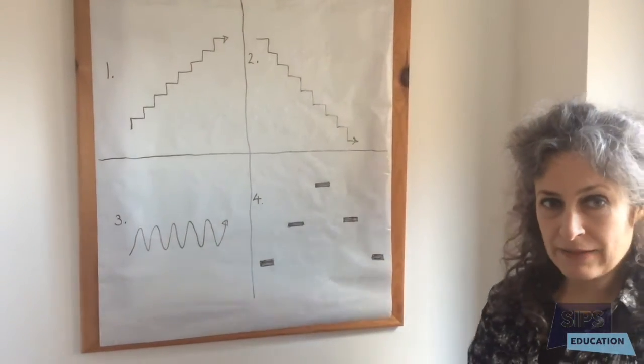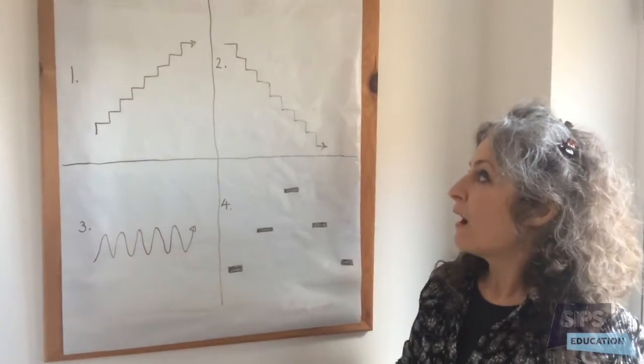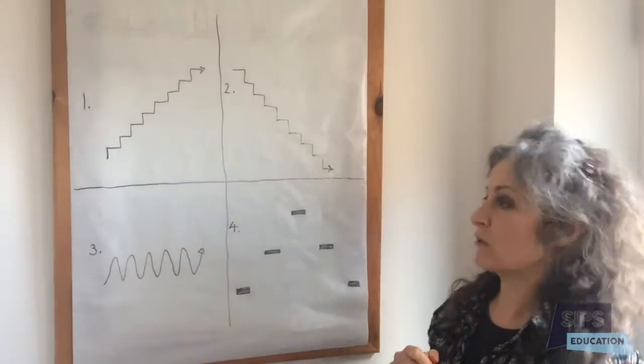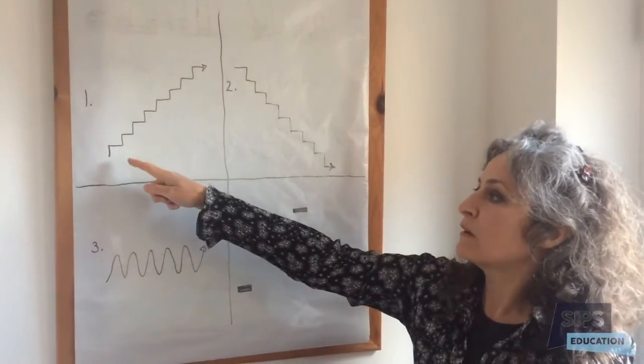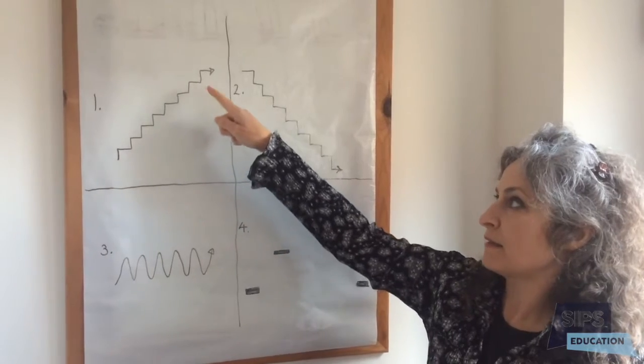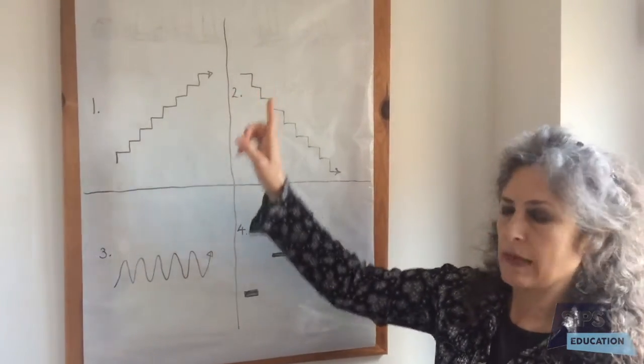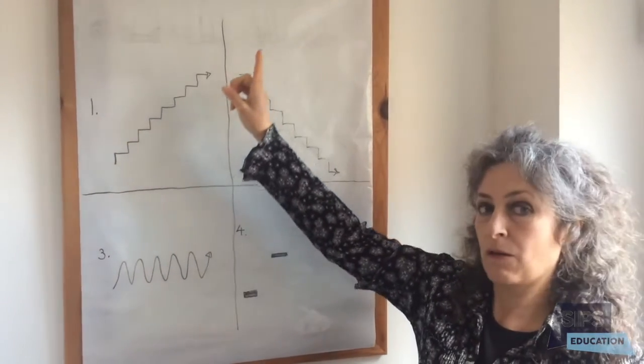So I have a little game for us to play. On my board here I have some pictures. Number one looks a bit like a staircase and we have the arrow on the end so we're probably going up the staircase.